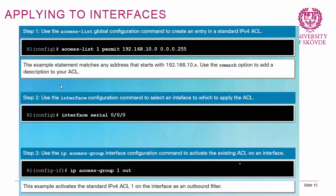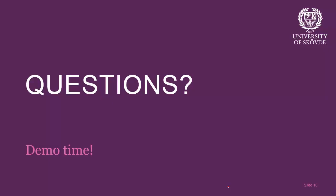To apply an ACL to an interface, first create the access control list — for example 'access-list 1 permit [IP] [wildcard]' — then go into the interface and use 'ip access-group [ACL number] [in|out]'. The direction can be 'in' for incoming packets or 'out' for outgoing packets. This configuration creates the ACL and applies it to the interface as a filter.